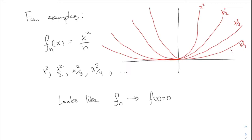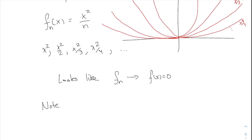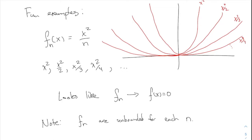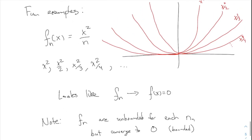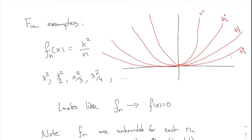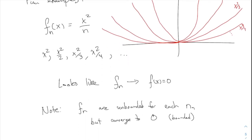Something immediately weird to notice: each F_n, as a function, is unbounded — every individual function in this sequence is a parabola that goes up forever. But what they converge to is the constant function zero, which is bounded — extremely bounded. So F_n are unbounded for each N, but they converge to zero, which of course is bounded. Weird but true.